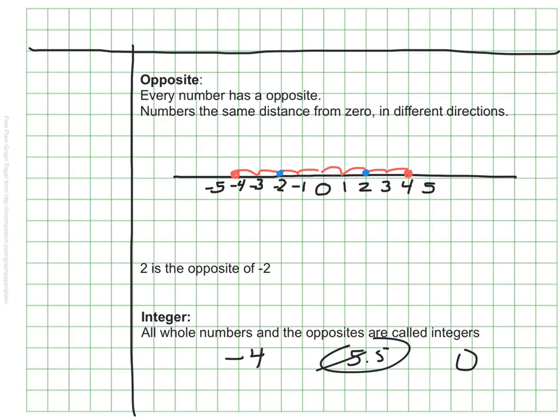Zero is actually an integer. And as a fun little fact, it's the only integer that is neither positive nor negative.